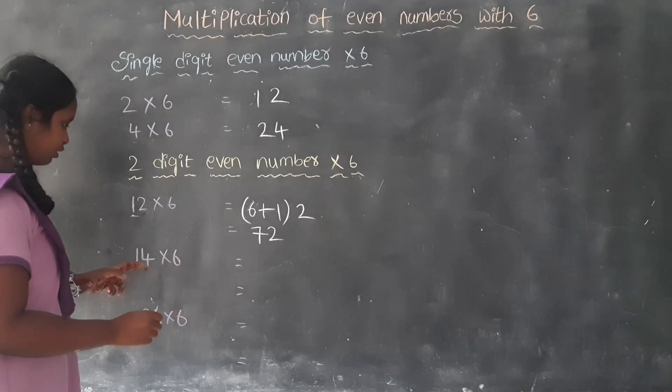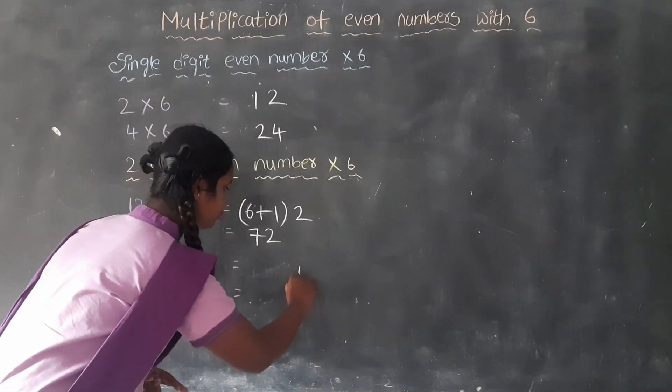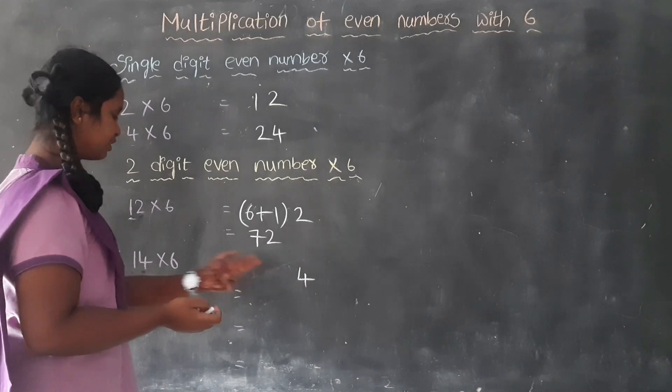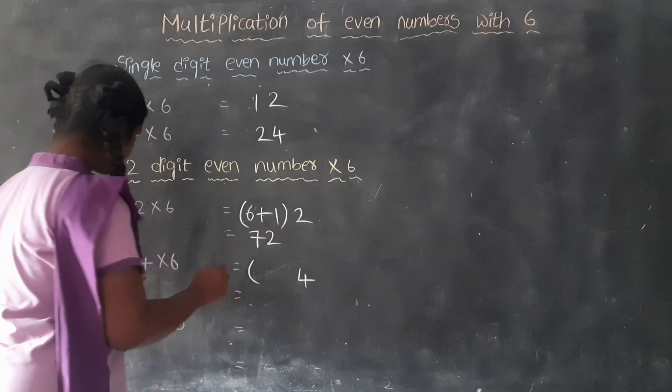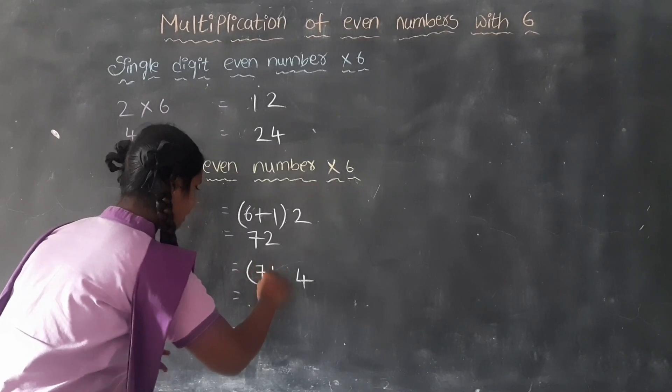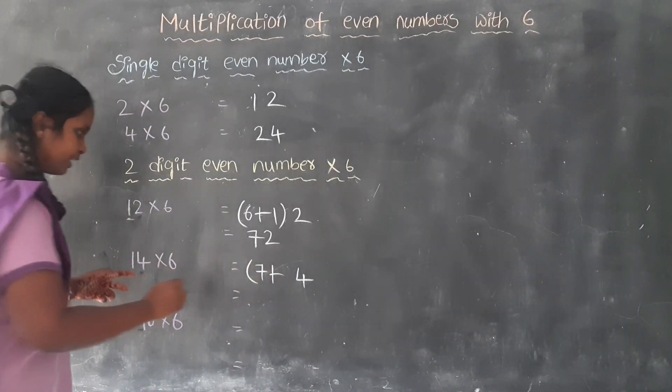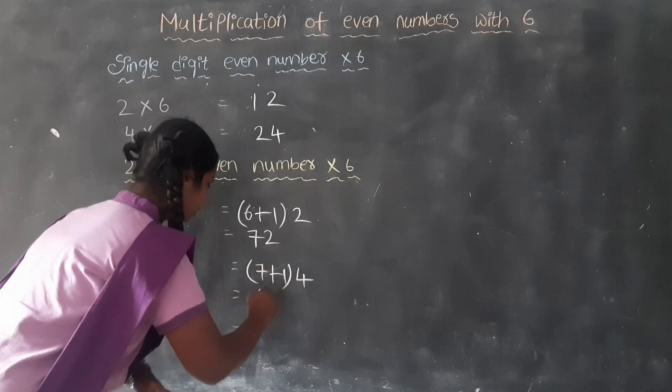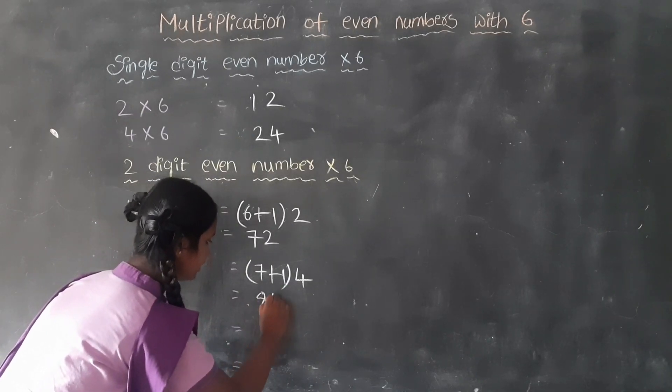14 times 6. What is the unit place here? 4. First we want to write the unit place as it is. Next, what is the half of 14? 7. Plus, what is the tens place here? 1. Answer is 84.